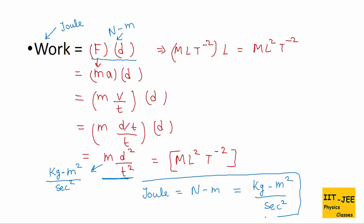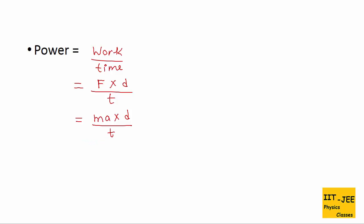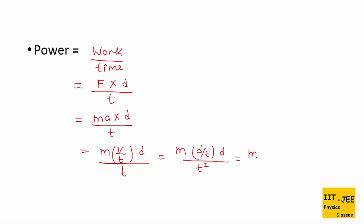Let's find the dimension of power. The formula of power is work over time. Work is force times distance. Break force into MA, then A into V/T, and then V into D/T. We have to keep breaking until we get all base quantities. Summarizing: power equals M D² over T³.